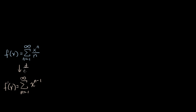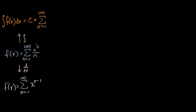So this is taking the derivative with respect to x. Similarly, we could integrate. We could evaluate the integral of f of x dx. And this is going to be equal to some constant plus, if we integrate this term by term, this is going to be equal to the sum from n equals one to infinity. We increment the exponent, so x to the n plus one, and then we divide by that — times n plus one — times this n right over here. So this is a common technique that you will see when dealing with power series.